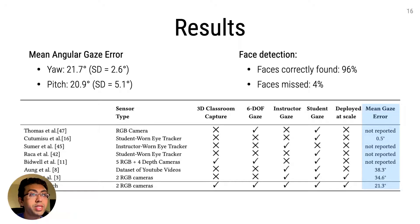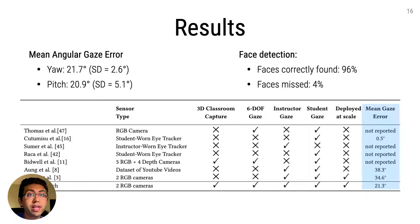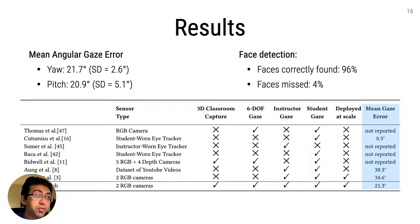We evaluated our system in a controlled study with ground-truth gaze targets across eight participants, and also deployed our system in five real classrooms for one semester and had human annotators evaluate our system's gaze estimation performance. Our system has a mean gaze error of 21 degrees and finds faces correctly 96% of the time, which compares favorably against prior works highlighted in the table.